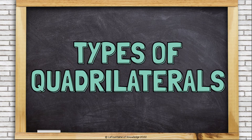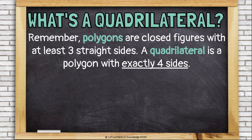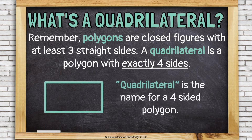Types of Quadrilaterals. What's a quadrilateral? Remember that a polygon is a closed figure with at least three straight sides. A quadrilateral is a polygon with exactly four sides. Quadrilateral is the name for a four-sided polygon.